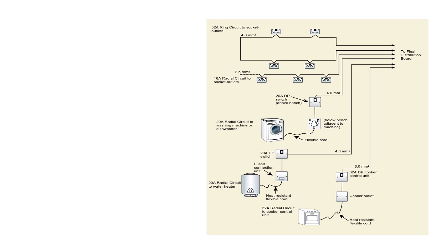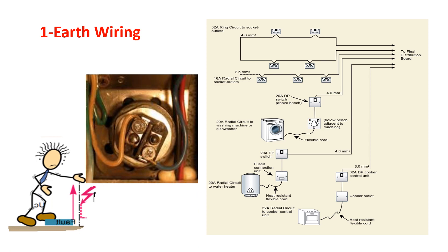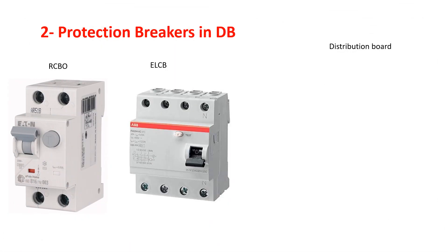In our houses we have washing machines, geysers or water heaters, refrigerators, ovens, and different sockets and appliances. For all these appliances, we need earth wiring. You need to run a conductor from each piece of equipment all the way to the final distribution board. The phase and neutral wires are connected to the water heater, and an earth wire is connected to the body of the equipment. This is how earth wiring needs to be done.